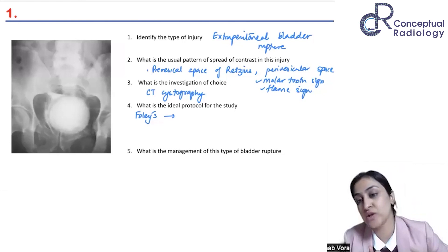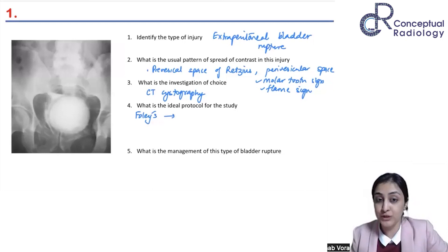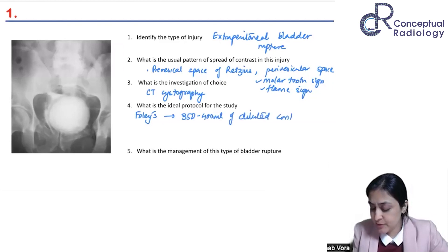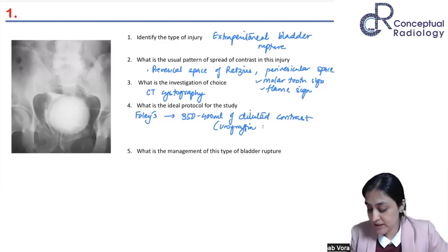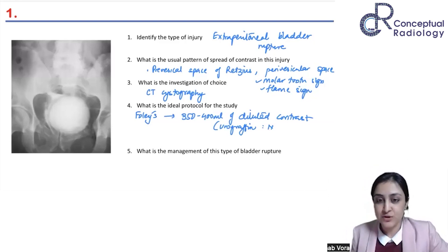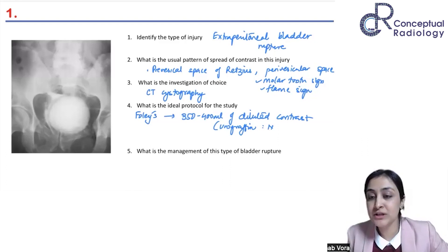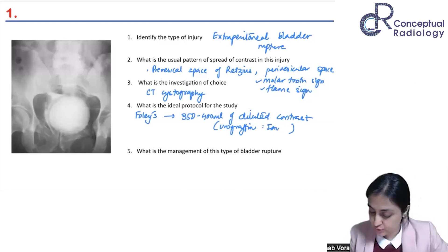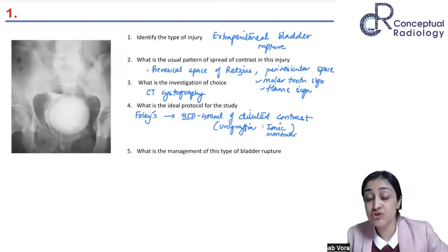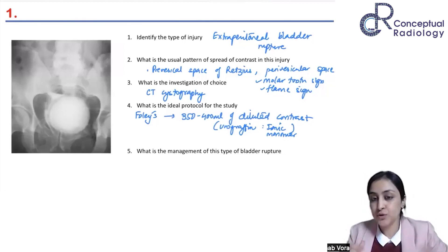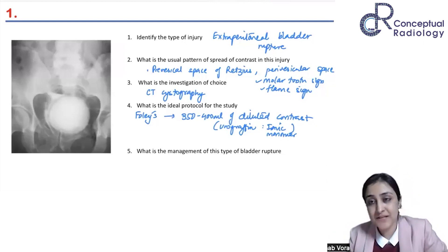How much contrast do you inject? It's diluted contrast. In MCU we put around 400 ml — and here similarly we put around 350 to 400 ml. After placing the Foley catheter, you instill around 350–400 ml of diluted contrast. The contrast we prefer is urographin. Urographin is diatrizoate — it's an ionic monomer contrast, the oldest contrast we have. That's why we don't use it IV; we use it for intravesicular insertion in RGU and MCU.